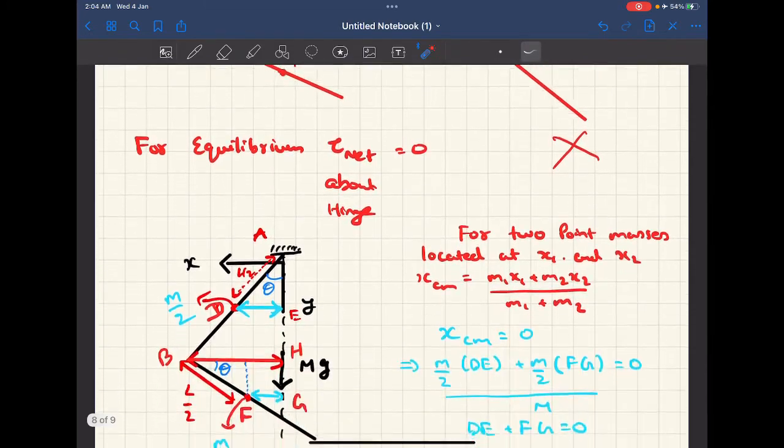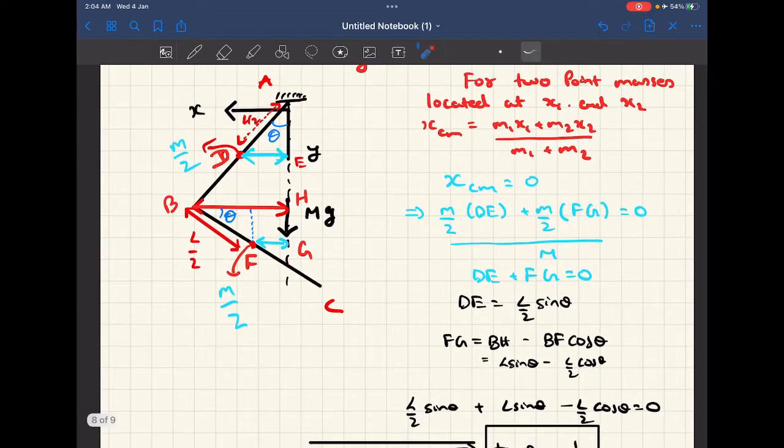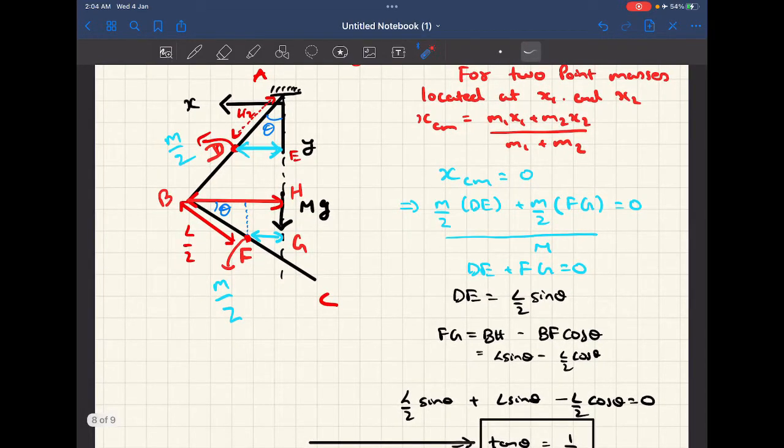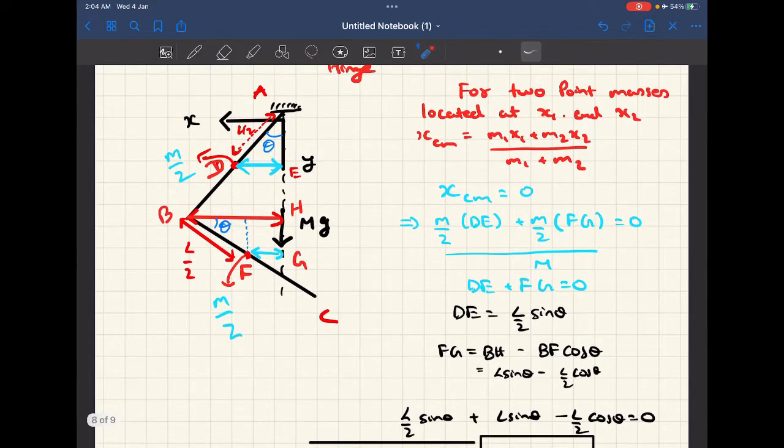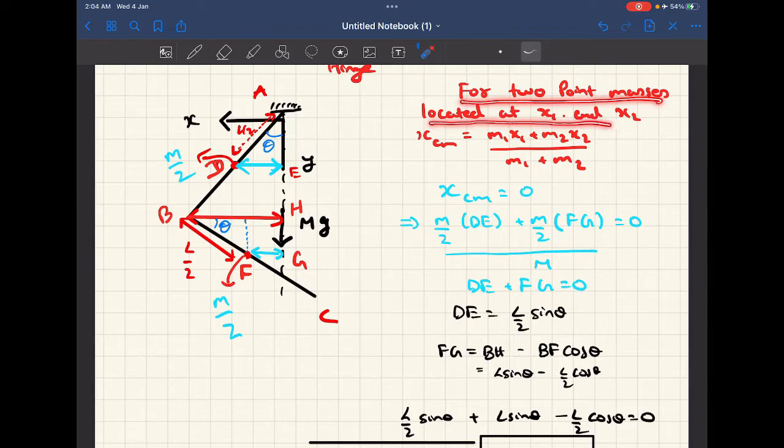We'll be using this fact for solving this question which most of you might already be familiar with. So if there are two point masses which are located at, let's say, x1 and x2, which are their x coordinates basically.